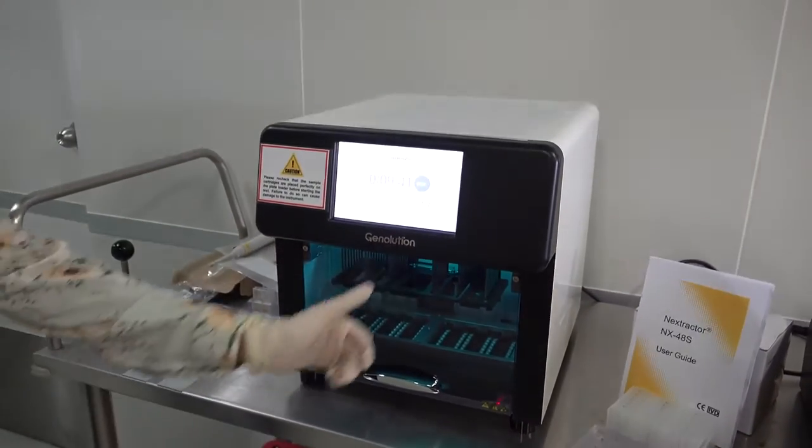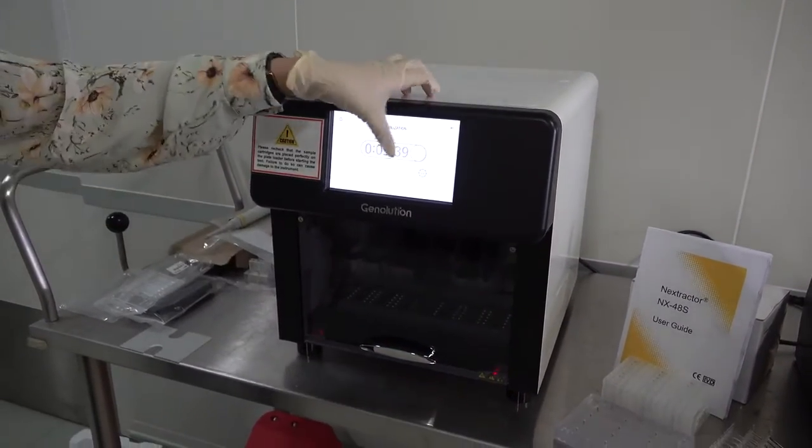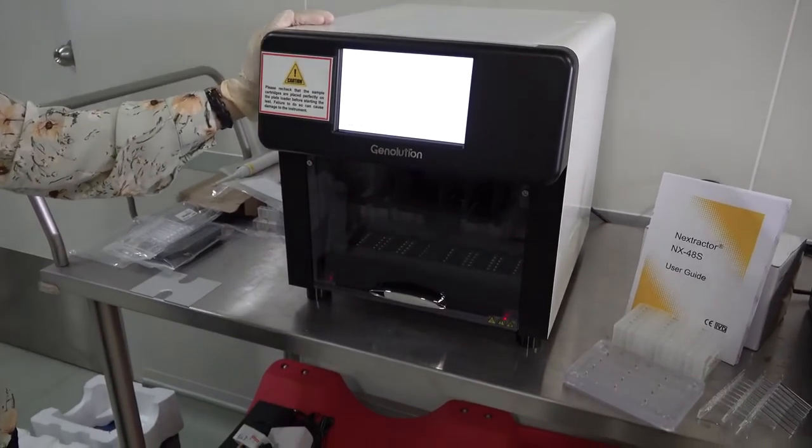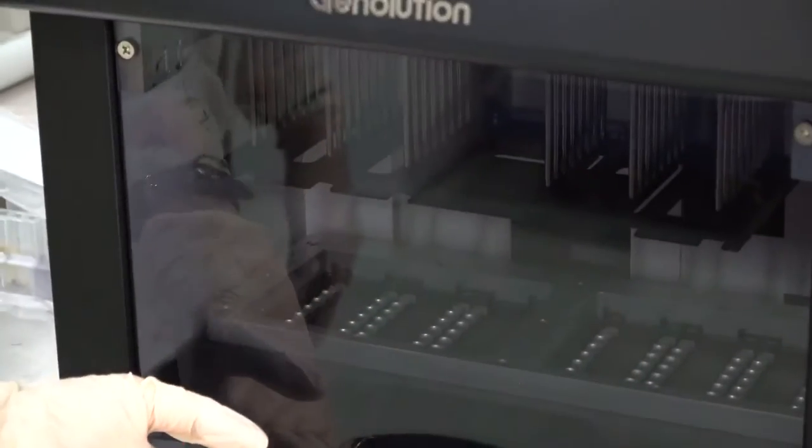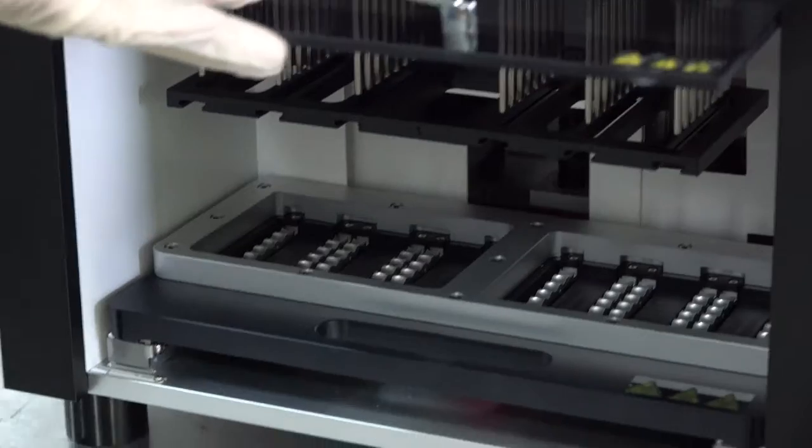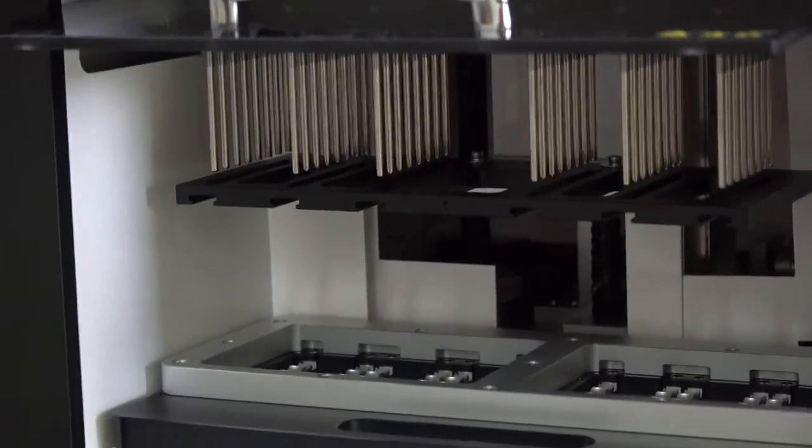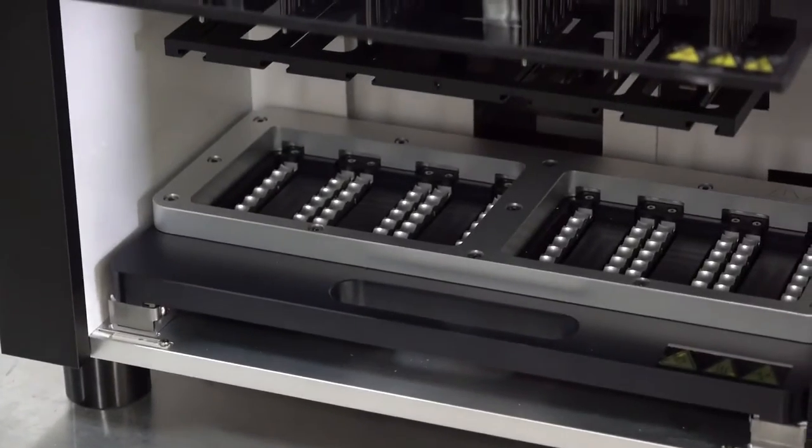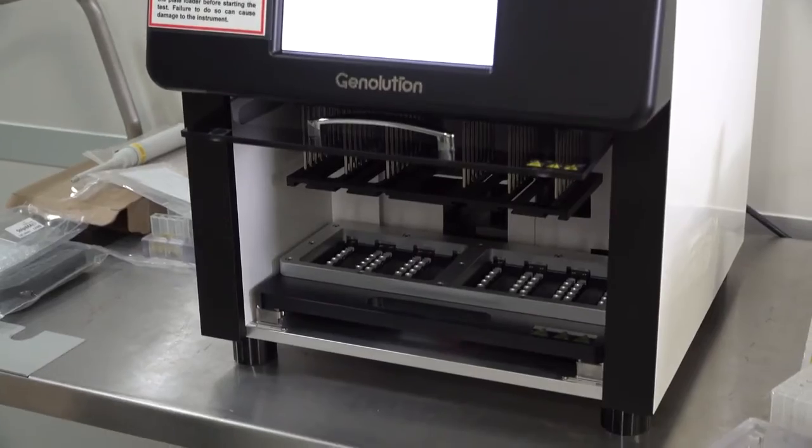The next procedure is basically the system setup itself. We will proceed to the system setup. As you can look into the unit, once it's open, you will see that there are some kind of magnetic spindles over here as well as a thermal cycling block. This is actually a heating block. Let's proceed to the first part which is the installation of the strips.